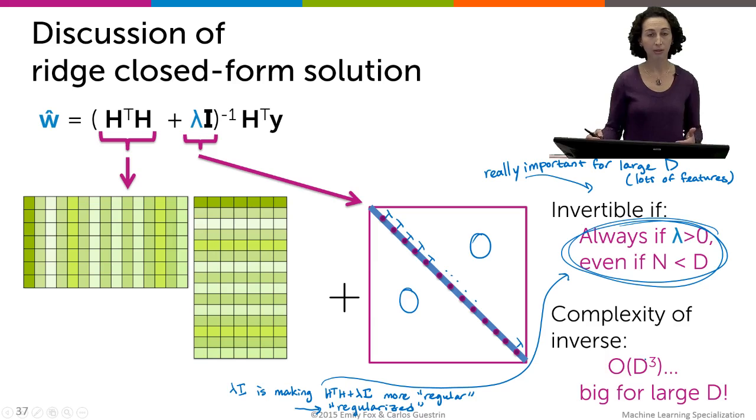The complexity of the inverse is still cubic in the number of features we have and often when we're thinking about ridge regression, like I said, we're thinking about cases where you have lots and lots of features. So doing this closed form solution that we've shown here can be computationally prohibitive.